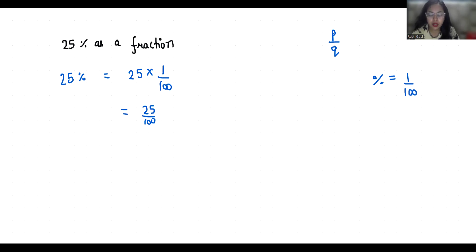This can be simplified by dividing both the numerator and denominator by their greatest common factor. The greatest common factor is 25. So I'm going to divide both numerator and denominator by 25, which gives us 1 by 4.